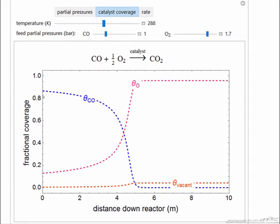If I look at the coverages, notice that at the beginning of the reactor the catalyst is mostly covered with carbon monoxide, a much smaller amount of oxygen because carbon monoxide adsorbs more strongly. Then as the carbon monoxide reacts away, as its partial pressure decreases and its coverage decreases, the coverage of oxygen increases significantly. And also the coverage of vacant sites increase.